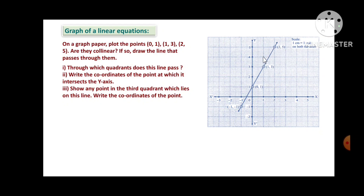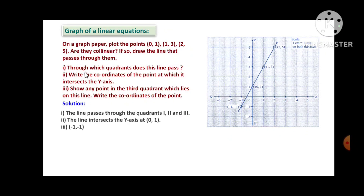These three points are collinear and the nature of the graph is a straight line. Through which quadrant does this line pass? The line passes through the first, second, and third quadrants. Write the coordinates of the point at which it intersects the y-axis: it intersects at (0,1). Show any point in the third quadrant which lies on this line — that point is (-1,-1).